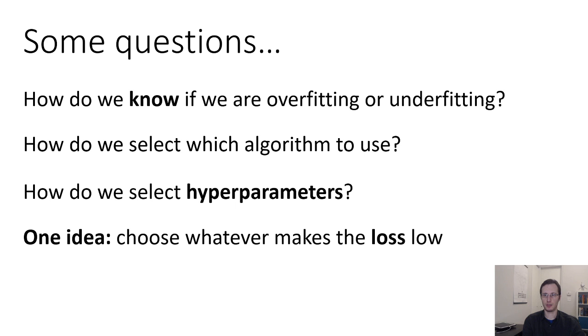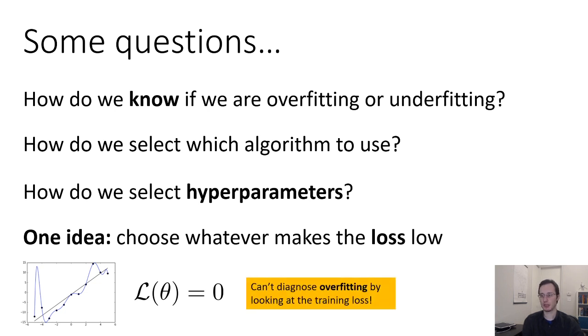One idea is to make these choices based on whatever makes the loss low. But that's not a good idea, because things like hyperparameters, the choice of which features to use, the choice of which algorithm to use, all these choices have to trade off bias and variance. But just looking at the training loss doesn't tell us about whether we're suffering from bias or variance. Well, it tells us we're suffering from bias, but it doesn't tell us much about variance, because our training loss might be zero, but we might have overfitted heavily. So training loss isn't enough to figure out what the variance is. We can't diagnose overfitting by just looking at the training loss. So we need a better workflow.